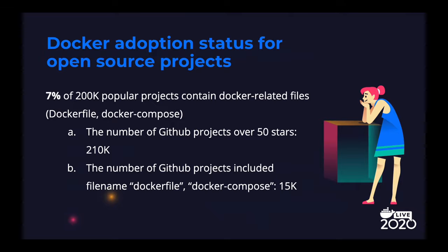Let's take a quick look at Docker adoption status for open source projects. According to our research, 7% of 200k popular projects contain Docker-related files. We crawled GitHub projects over 50 stars, which was 210k. Then we counted GitHub projects which include a file named Dockerfile or Docker Compose, which was 15k.